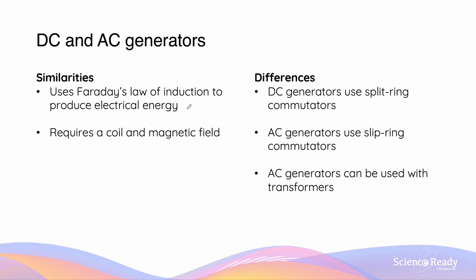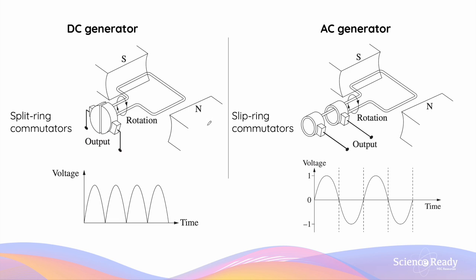Let's compare the two types of generators. Both AC and DC generators utilize Faraday's law of induction to produce electrical energy, made possible by using a coil rotated inside an external magnetic field. However, DC generators use split ring commutators, whereas AC generators use slip ring commutators. Another important difference is that the current produced from an AC generator, that is alternating current, can be used with transformers, whereas DC generators are incompatible. Here's a diagrammatic comparison of DC and AC generators — the main difference is the type of commutators used. The voltage in these generators varies sinusoidally, but for a DC generator, the direction of voltage and current will always remain positive and unidirectional at all times.